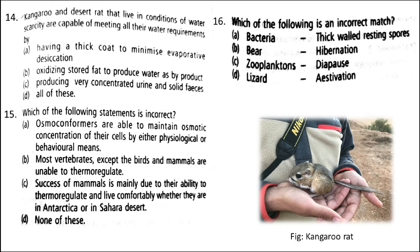Next: which of the following is an incorrect match? The correct option is option D. Aestivation is a state of inactivity occurring in some animals, notably lungfish, during prolonged periods of drought or heat. Feeding, respiration, movement, and other bodily activities are considerably slowed down. Reptiles such as lizards hibernate in winters.